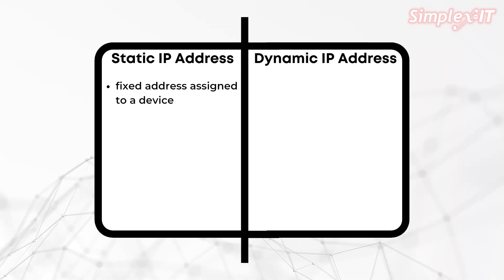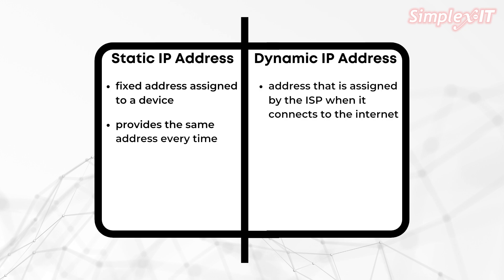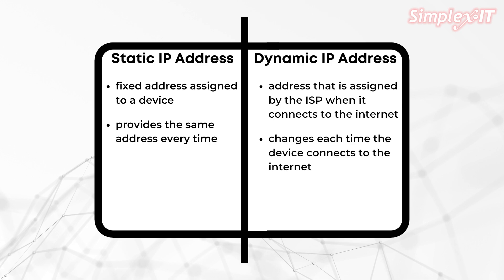What's the difference between a static IP address and a dynamic IP address? Static is fixed — it's assigned to a computer or other device by an internet service provider, or ISP. It does not change and provides the same address every time a device connects to the internet. A dynamic IP address is assigned to the device by the ISP using DHCP when it connects to the internet, and it changes — or can change — each time the device connects, so the address could be different each time.